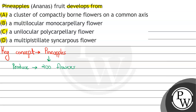और जब fruit produce होता है side shoot में, तो वो leaf axil का main axis होता है. फिर क्या होता है कि जो ovaries होती हैं, ये ovaries develop हो जाती हैं berries में. ये berries compact multiple accessory fruit बनाते हैं.